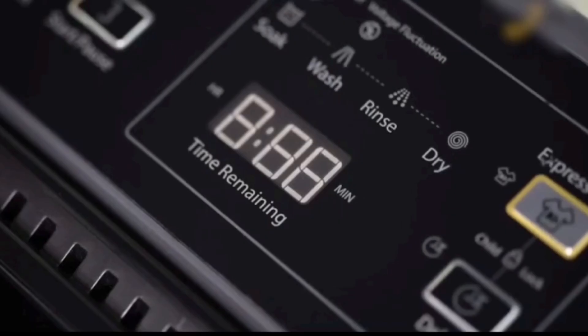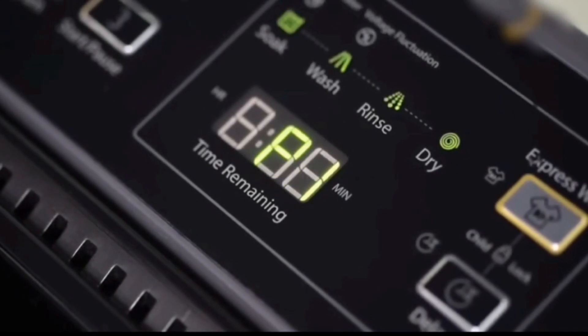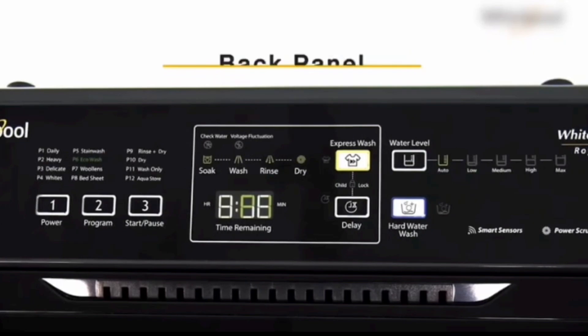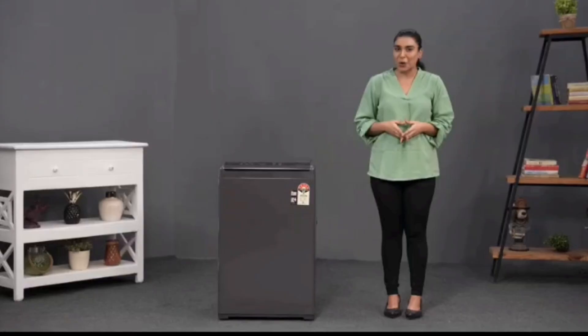This ensures peace of mind and long-term protection for your investment. Its innovative 1-2-3 wash feature simplifies the washing process with a user-friendly 3-button control panel. Just press 1-2-3 and let the machine's intelligence take over, delivering the perfect wash for your clothes.